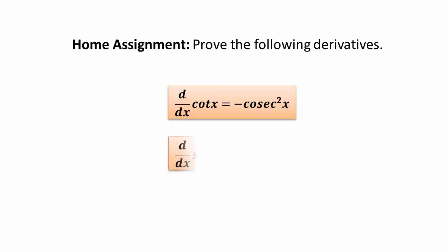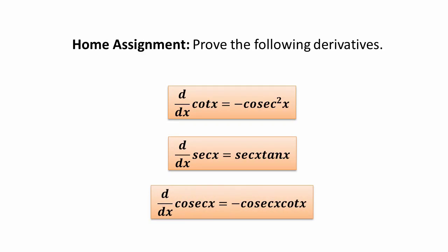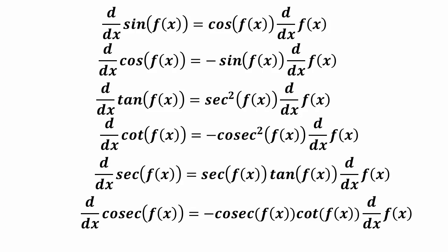Prove the following derivatives: d/dx(cot x) = -csc²x; d/dx(sec x) = sec(x)tan(x); d/dx(csc x) = -csc(x)cot(x). These are the standard trigonometric derivative formulas. Also, the derivative of sin(f(x)) = cos(f(x)) · f'(x), and the derivative of cos(f(x)) = -sin(f(x)) · f'(x).